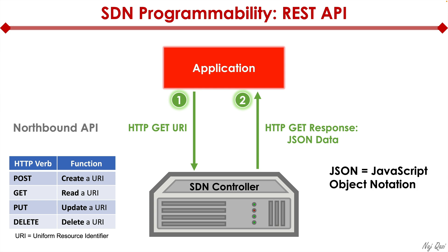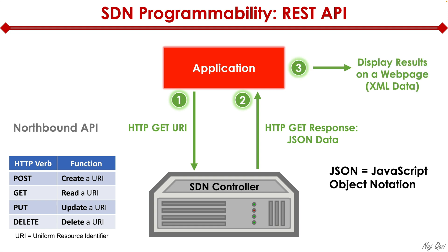The response comes back in a JSON data format. JSON stands for JavaScript Object Notation — it's a very popular, human-readable format that is widely adopted on a global scale today. It basically extracts that interface configuration in such a way that it becomes human readable. Ultimately, my application will then display the results of my initial request on a web page, and it could also be in an XML format. XML stands for Extensible Markup Language — it's a web-friendly language.